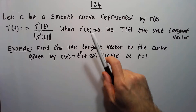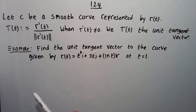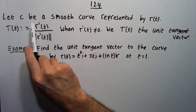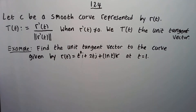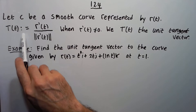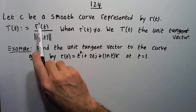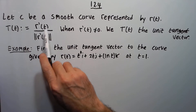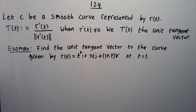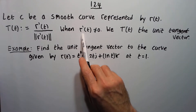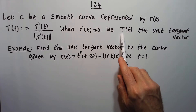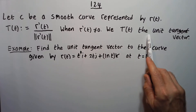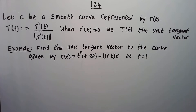Let's do section 12.4. It says let C be a smooth curve represented by R of T. Then we define capital T to equal R prime divided by the magnitude of R prime, when R prime is not zero. We call this capital T the unit tangent vector.